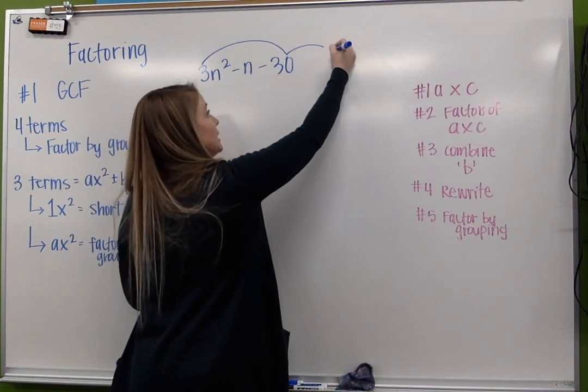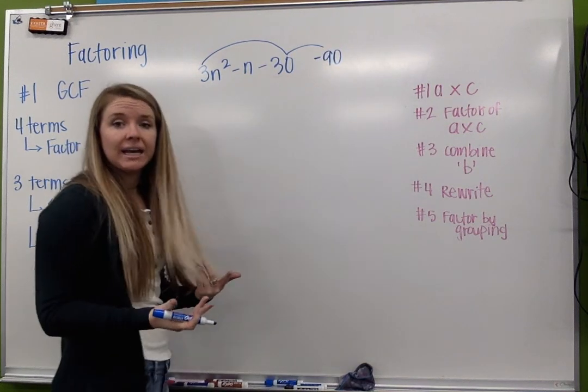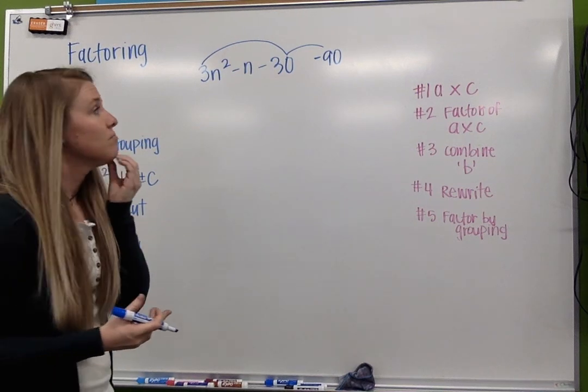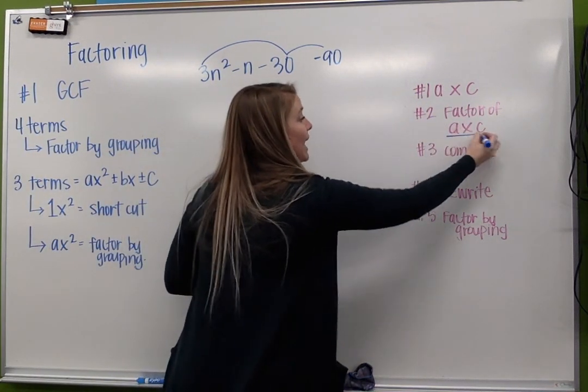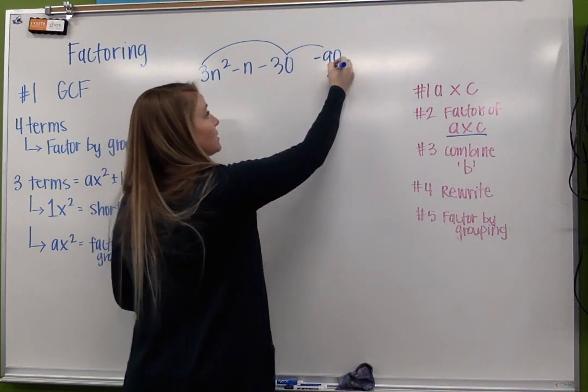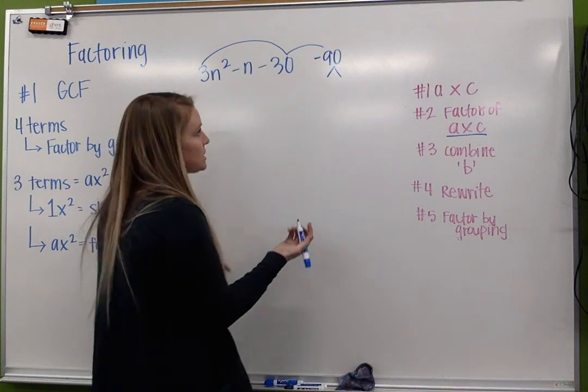First thing I'm going to do is take a times c. A times c, and I get 90. This is negative, so you can go ahead and include that negative. We're looking at a negative 90. We're going to find the factors of that number, whatever that a times c is. So we're going to find the factors of 90. In this case, there's going to be a pretty substantial list because it's a big number.